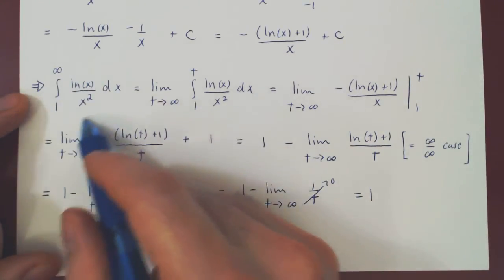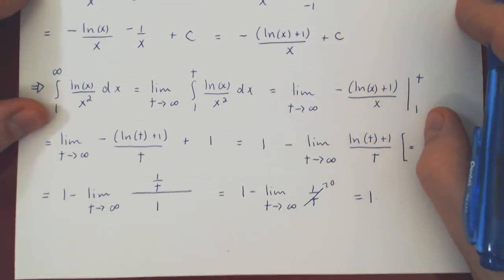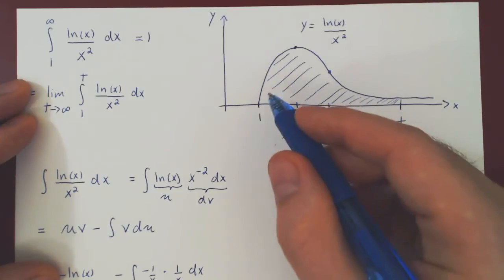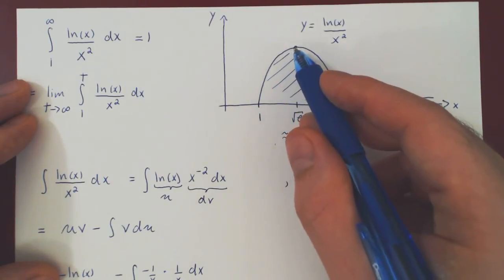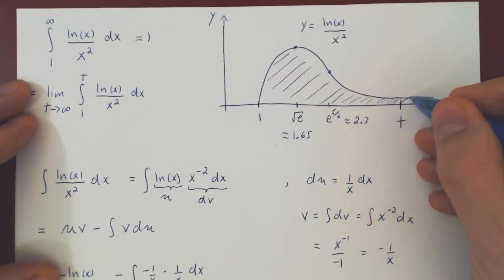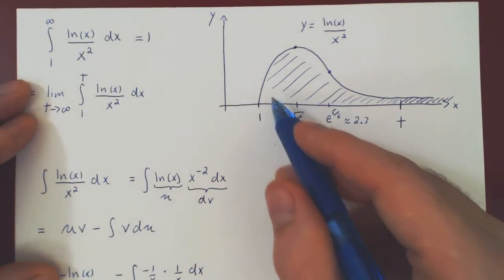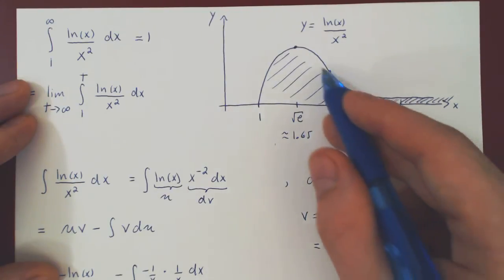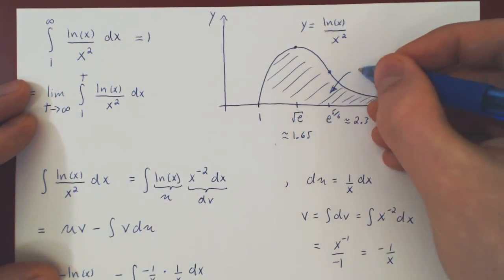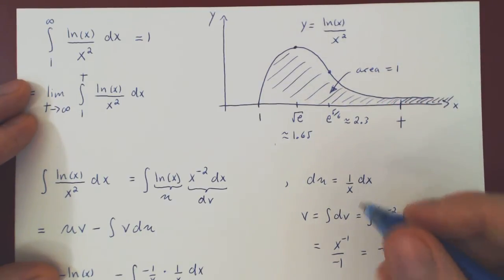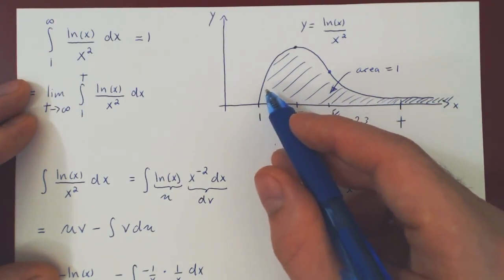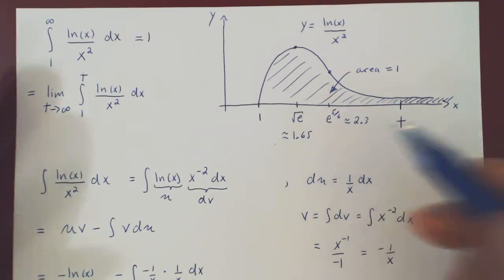So the improper integral converges and is exactly equal to 1. If we go back to the geometry of the problem, this means that we have this infinitely long region, that is a region bounded by the curve ln of x over x squared from 1 all the way up to positive infinity. Even though this region is infinitely long, and a rather interesting region like that, its area is exactly equal to 1. So once again, this is a very neat conclusion. We have this really nice infinitely long region which has finite area exactly equal to 1. And that's it.